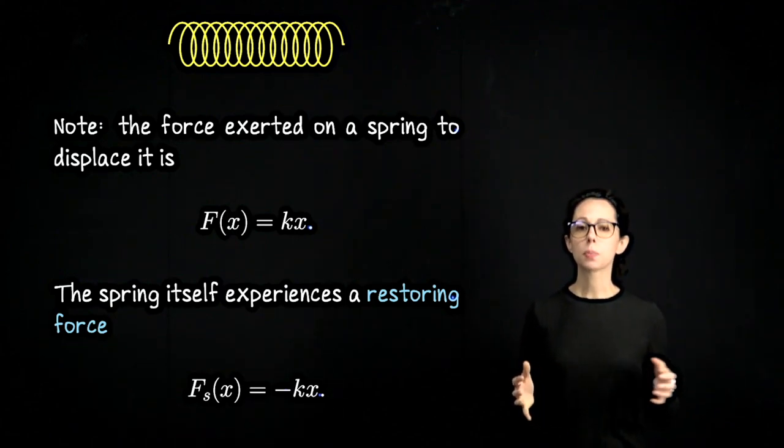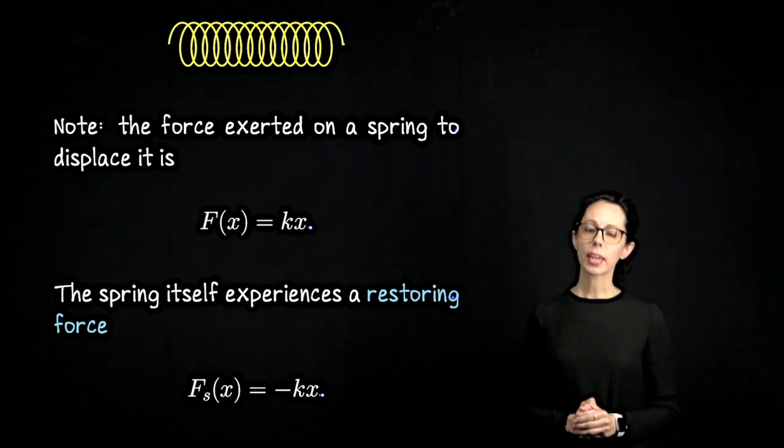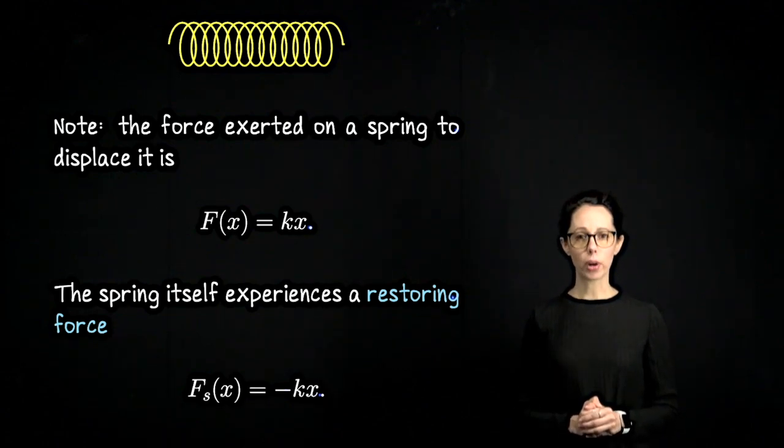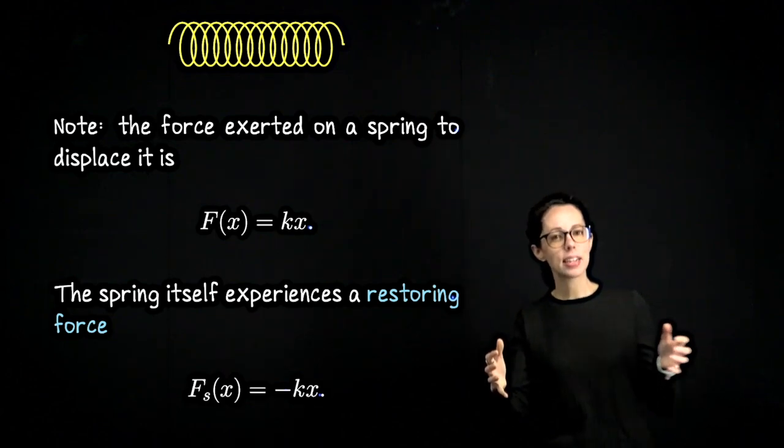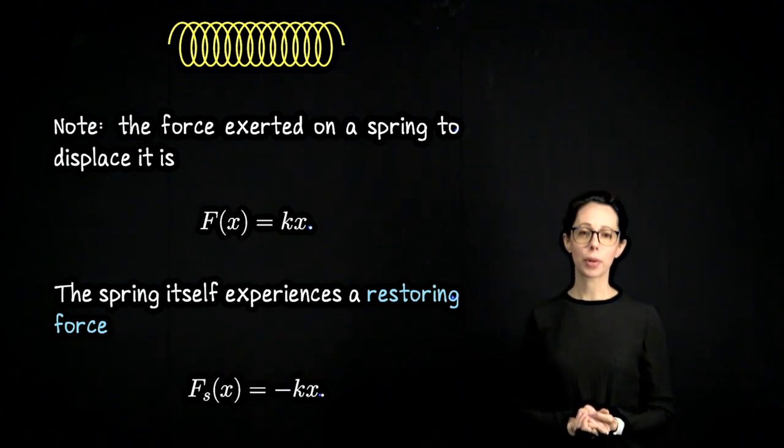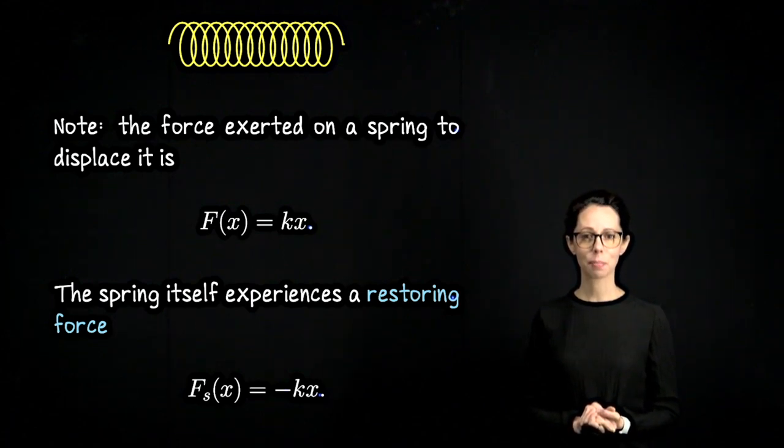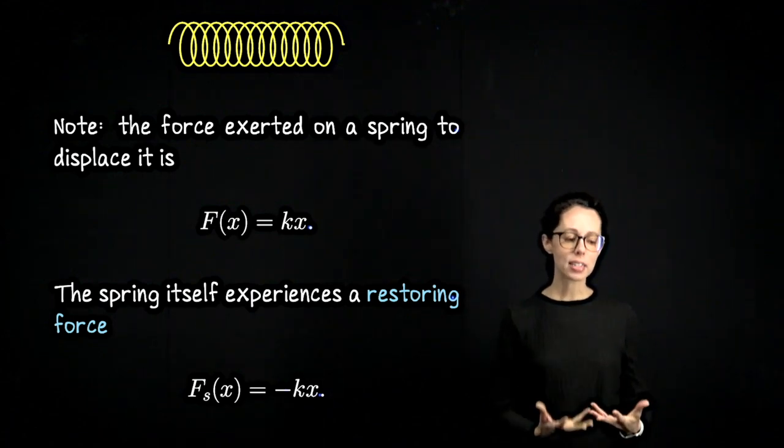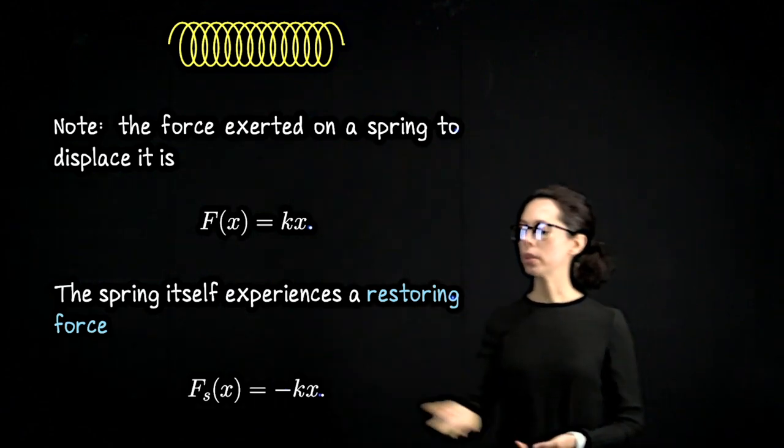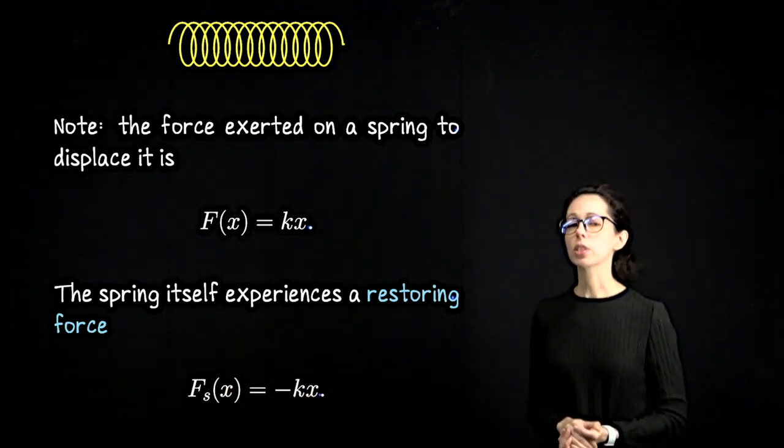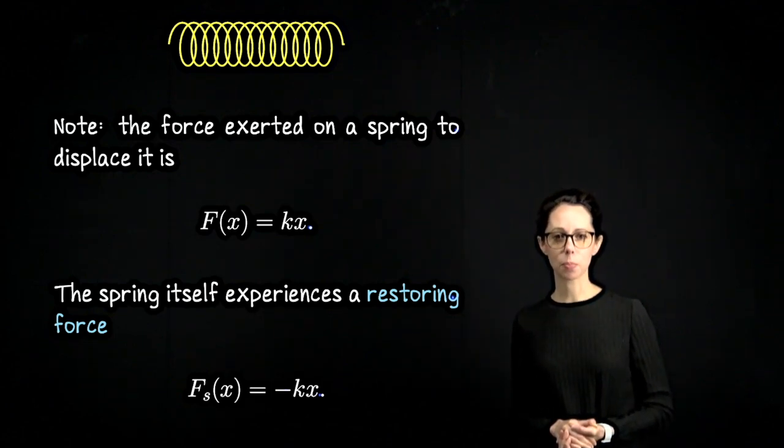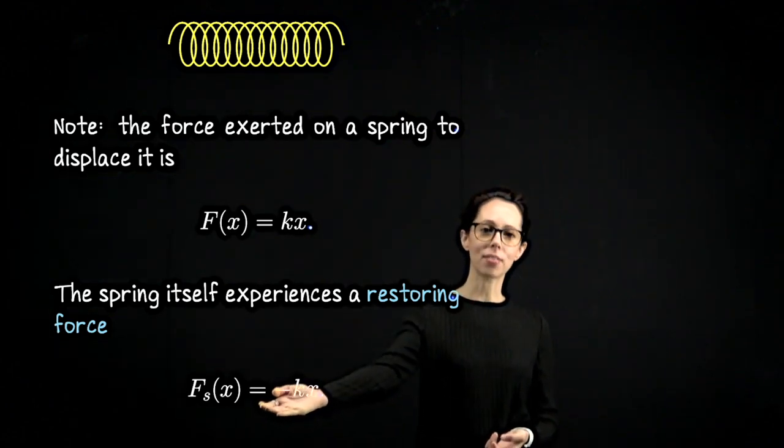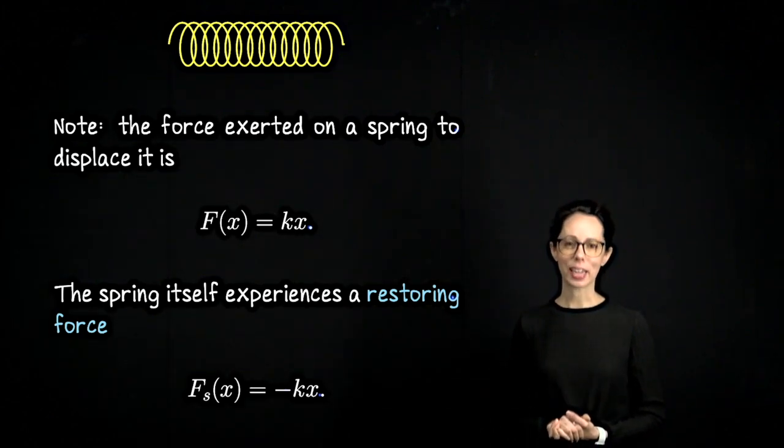That's the force required to displace the spring. But the spring experiences a restoring force. So if you imagine the spring, once you've stretched it out, it has a natural pull to return to equilibrium. That's called the restoring force acting on the spring. To present that type of force, we have a very similar looking equation. We say the restoring force of the spring is proportional to the spring's displacement from equilibrium, but with a negative sign. So it's the same k, but we have that leading negative.